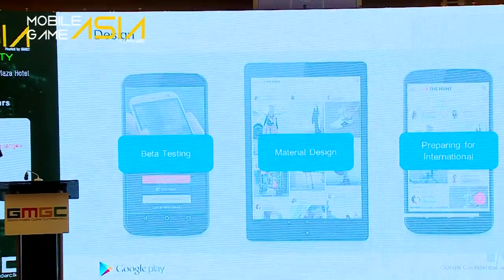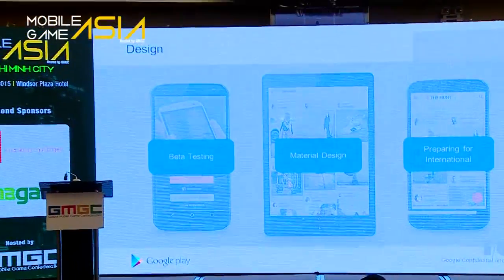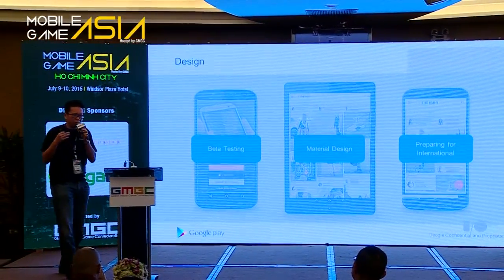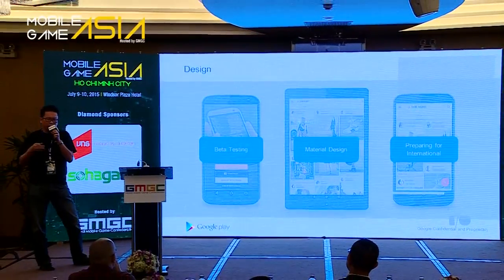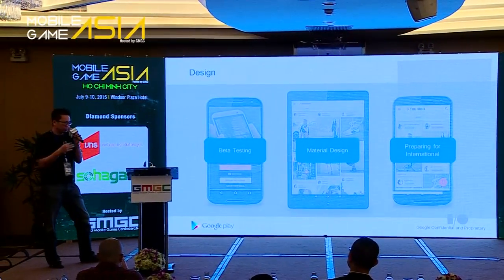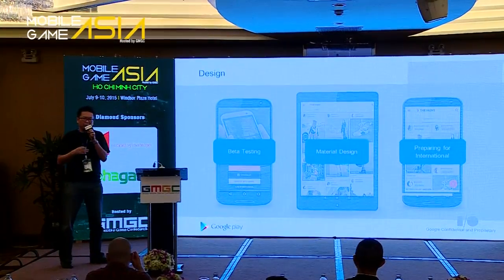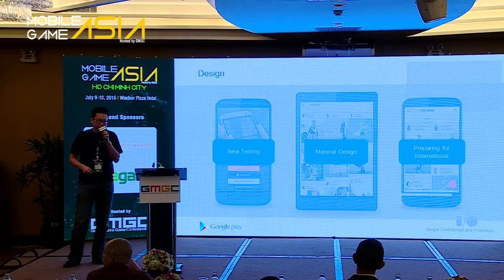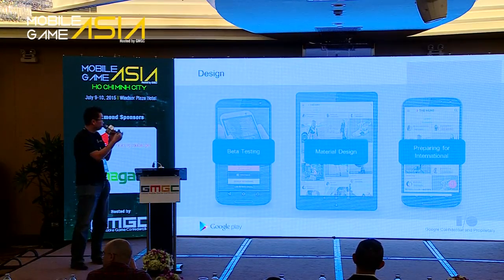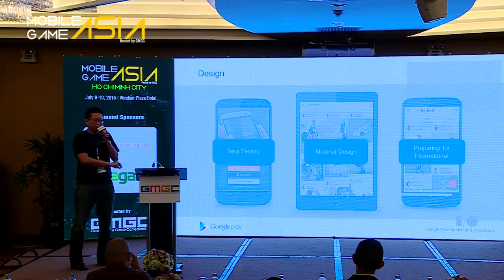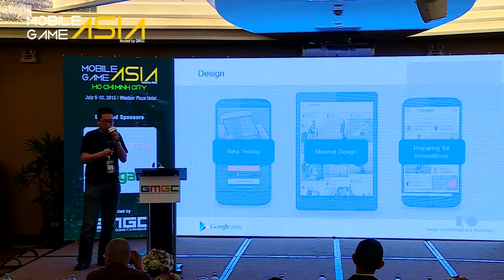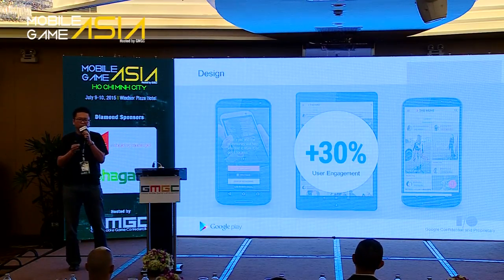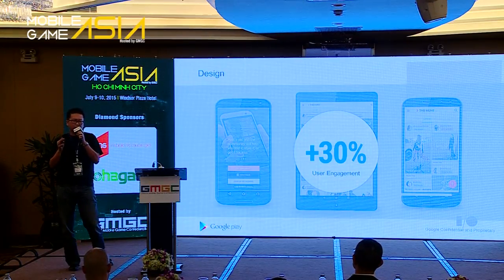That was the experience of The Hunt. They focused on three main things: beta testing — alpha beta testing on real-life users with real-time feedback and reviews fed back to developers; material design, which was very key in their app design; and preparing for international markets. The results: up 30% in terms of user engagement, just from those design principles — and once again, no featuring involved.